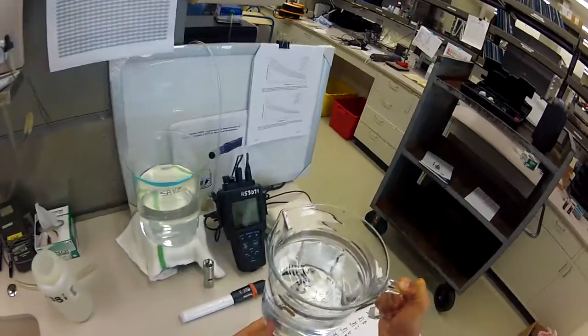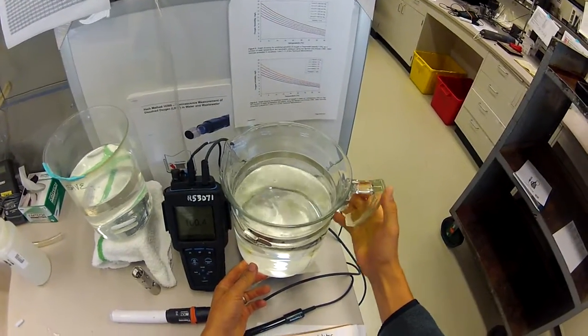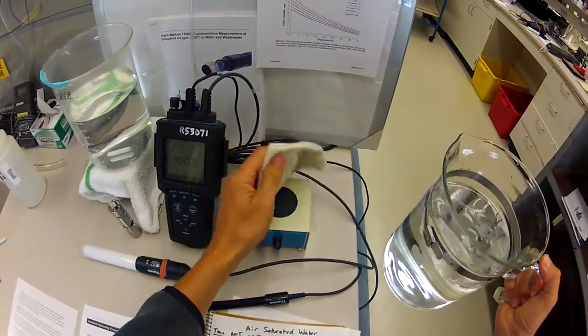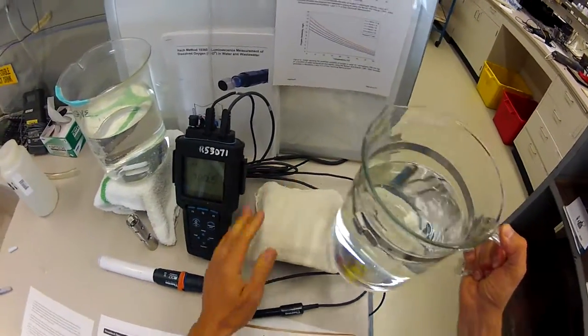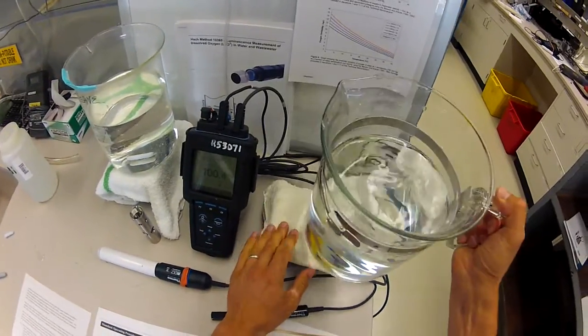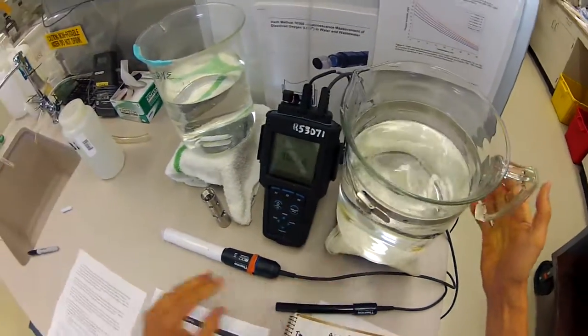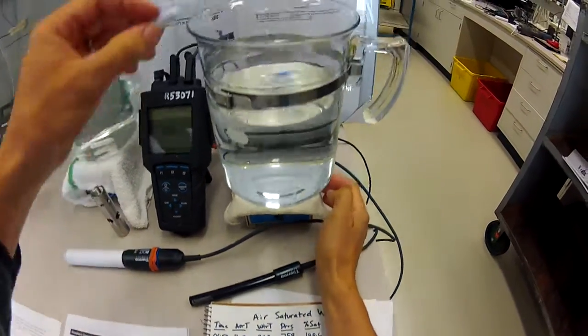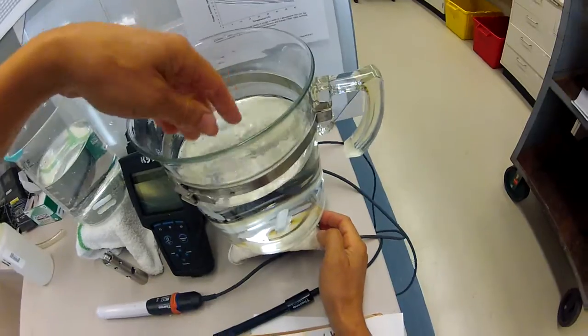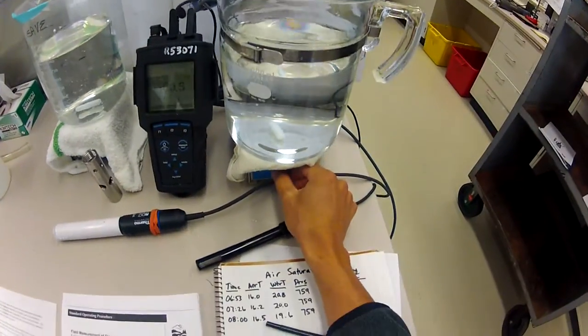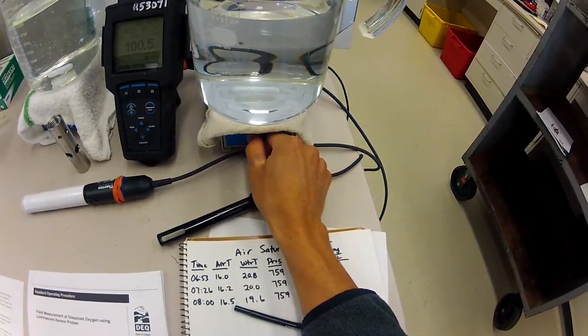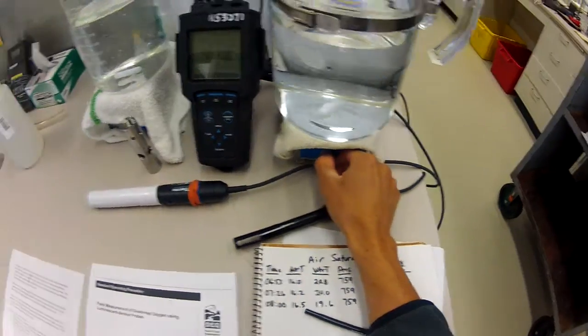I would fill this up, put it on top of my stir plate, and I put a little thermal buffer on there, just a cloth to kind of keep any heat that's generated from the stir plate from translating up into the bottle. I'll throw my stir bar in there and get that going slowly, just stirring the water about.